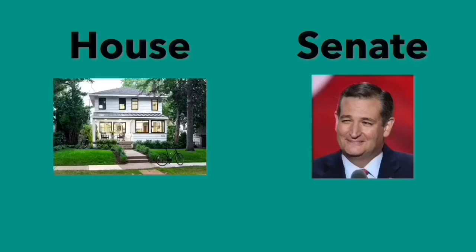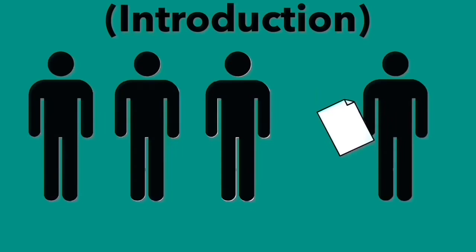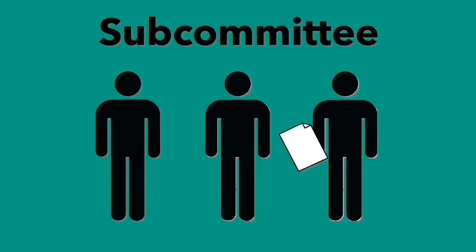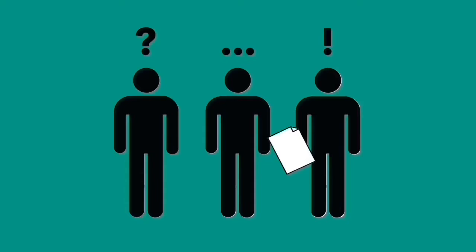After a congressman gets access to a bill, he takes it to one of two places: the House or the Senate. The process can start in either one, but let's say our congressman brings it to the House. The bill is introduced by the Speaker of the House and assigned to a subcommittee - this is where the committee work begins.